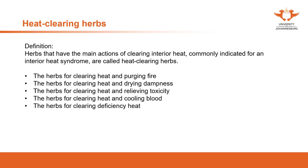This group of herbs can be further divided into five different categories: herbs for clearing heat and purging fire; herbs for clearing heat and drying dampness; herbs for clearing heat and relieving toxicity; clearing heat and cooling blood; and clearing deficiency heat. As you can see from the titles, this group of herbs share the common action of clearing heat, plus purging fire, drying dampness, relieving toxicity, cooling blood, or clearing deficiency heat.